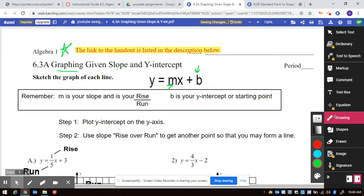So remember your m is the slope, it's your rise over run, b is the y-intercept or the starting point. I am going to work out the examples or talk about the examples that are already worked out.